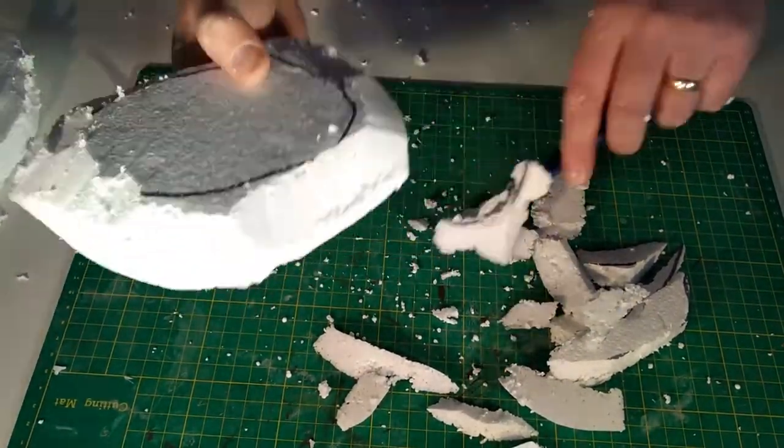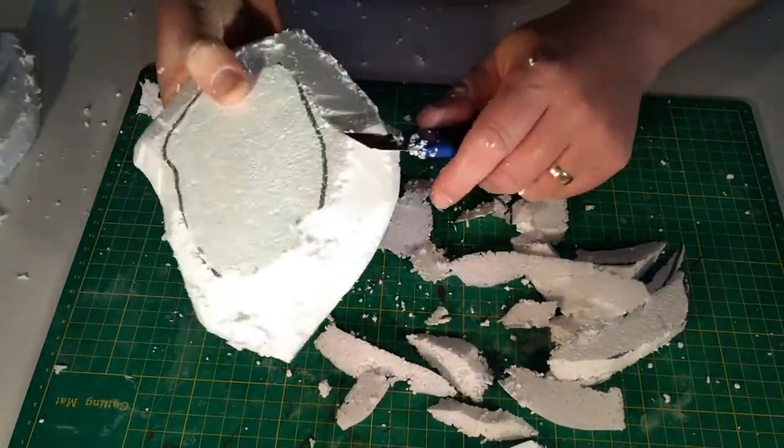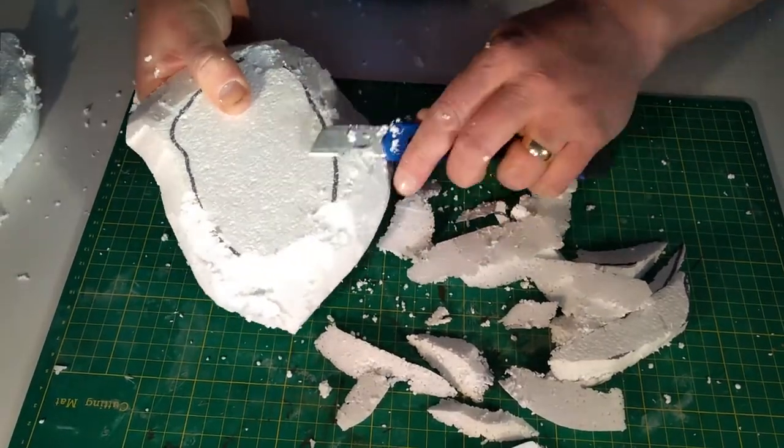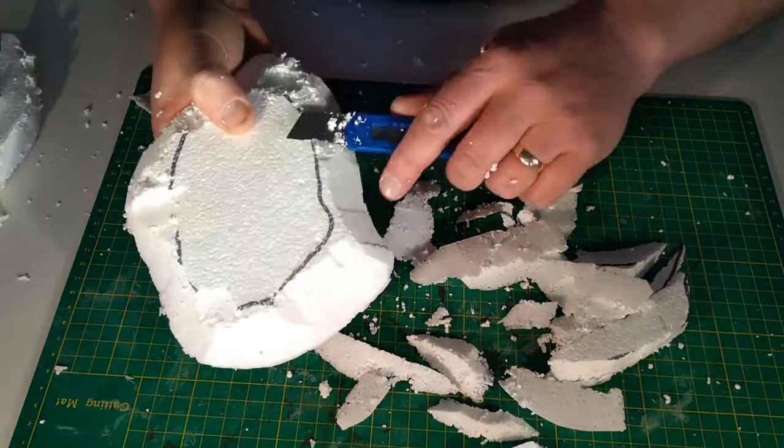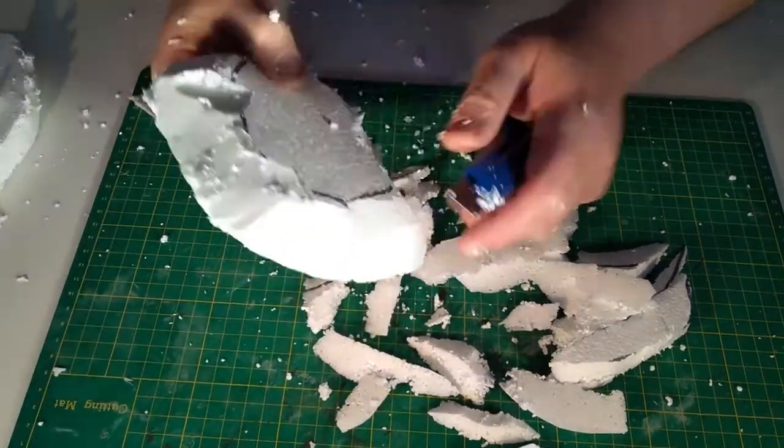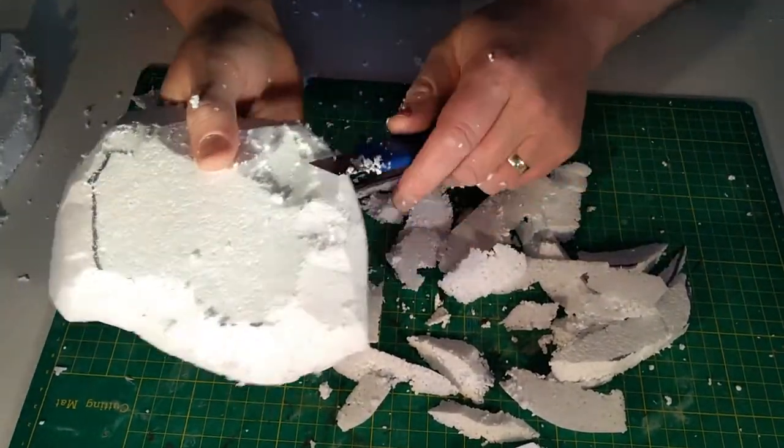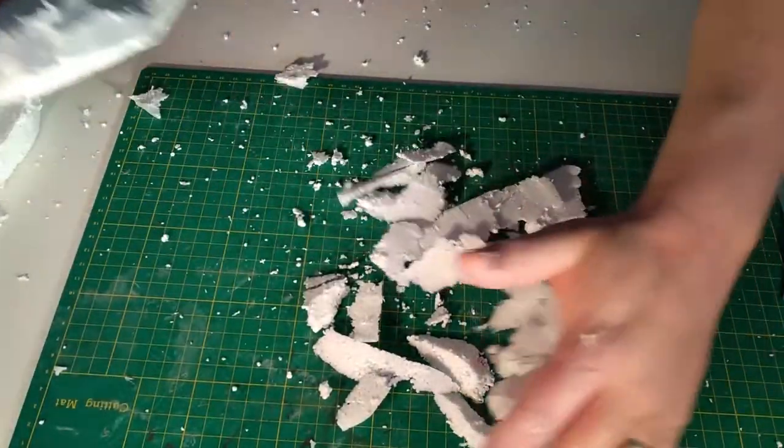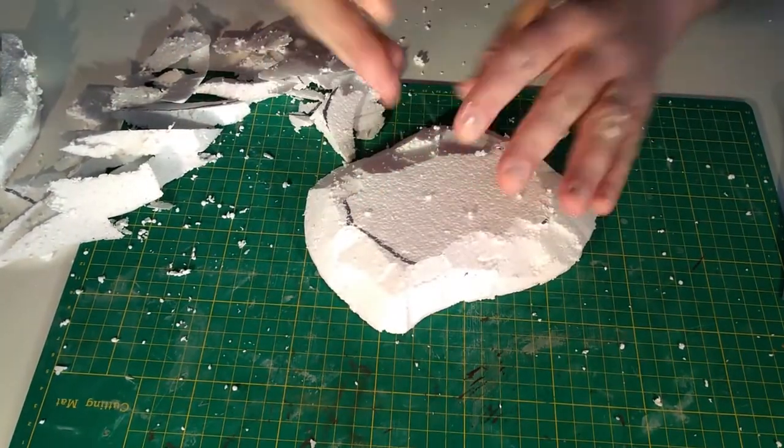You will notice as I'm cutting that I'm creating areas of my hill that are more shallow and others are more steep. Like nature, hills are not symmetrical, so don't get obsessed about making things look perfect. As you can see, this is a very basic hill shape. It's roughly carved out and looking very messy.